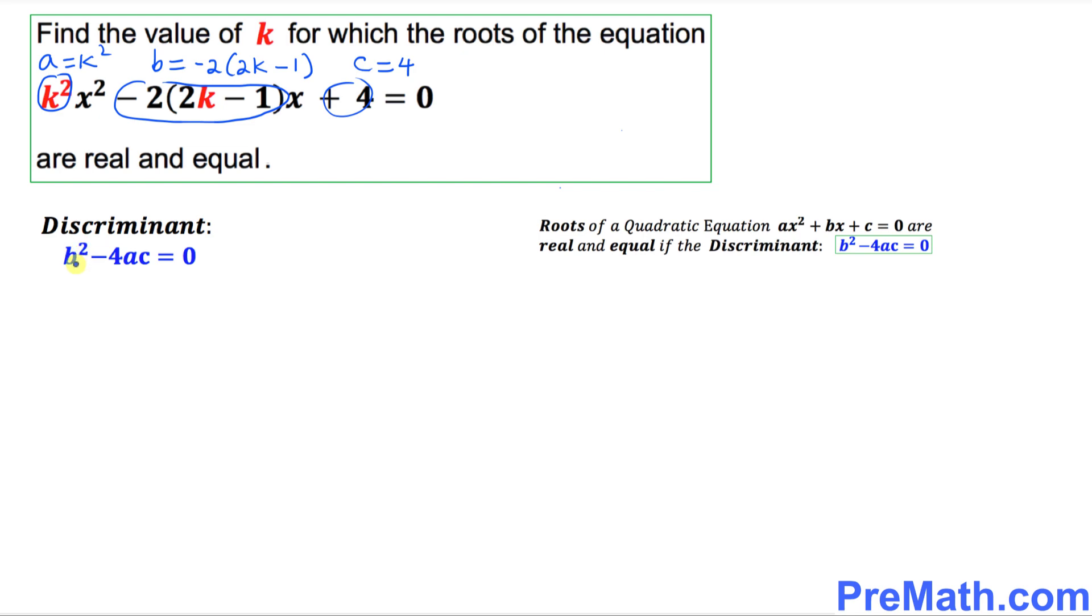So the discriminant is b² - 4ac = 0. Let's fill in the blanks wherever you see a, b and c values. So b in our case is -2(2k-1), and this whole thing squared minus 4 times a is k² times c is 4, and set it equal to 0.